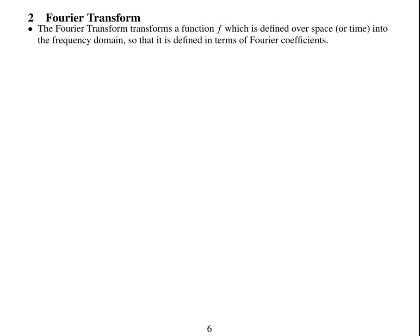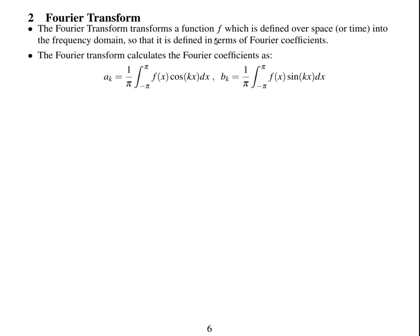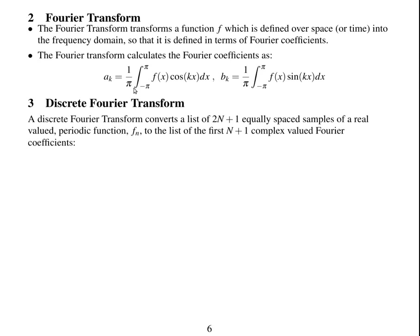Next, a Fourier transform transforms a function f, defined over space or time, into the frequency domain in terms of Fourier coefficients. Starting from f, we can work out all the Fourier coefficients a_k and b_k using analytic expressions — that's a continuous Fourier transform using an integral. A discrete Fourier transform converts a list of 2n+1 equally spaced samples into a list of the first n+1 complex-valued Fourier coefficients, calculated with a sum rather than an integral.